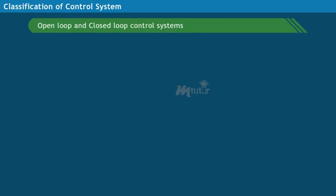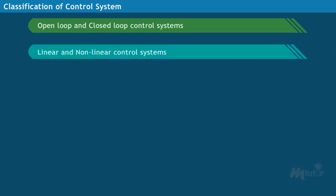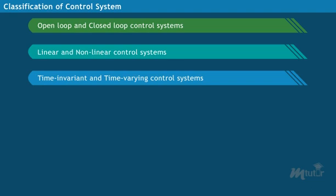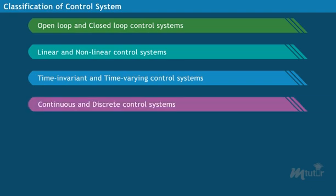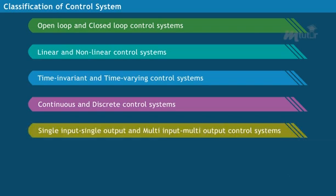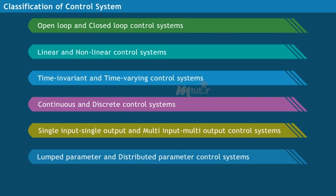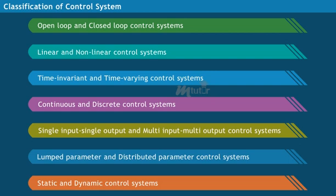Control systems are classified as open loop and closed loop control systems, linear and non-linear control systems, time-invariant and time-varying control systems, continuous and discrete control systems, single input single output and multi-input multi-output control systems, lumped parameter and distributed parameter control systems, and static and dynamic control systems.